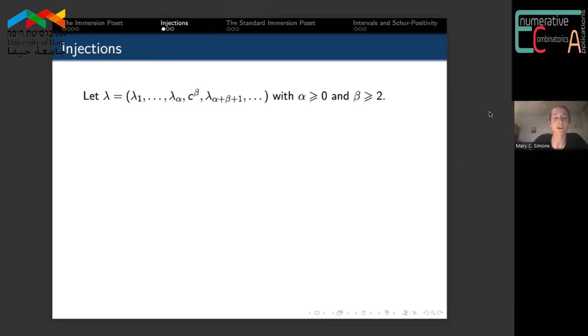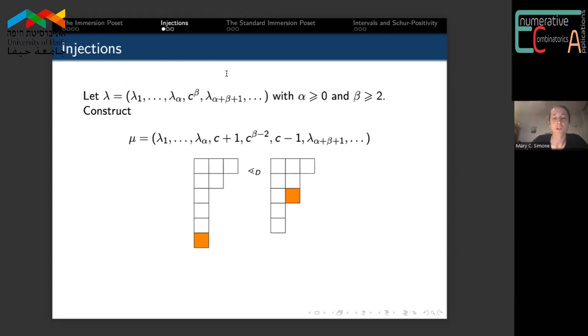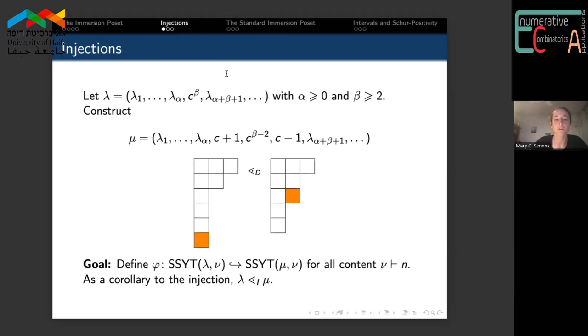We'll start with these injections between sets of semi-standard Young tableaux of specific shapes that will give us relations and covers. Suppose we have an integer partition λ that has some repeated part of size c, so β copies of a part of size c. From λ, we'll construct the shape μ by moving one of the boxes in column c into column c plus one.